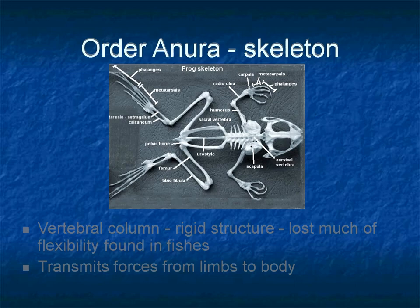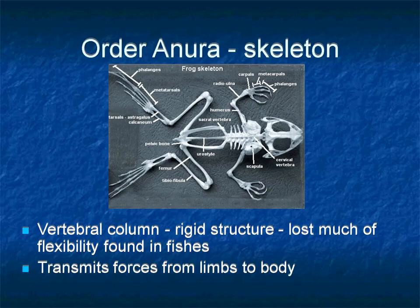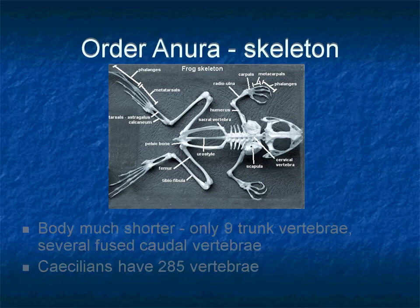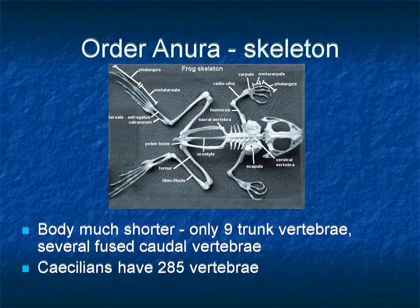Amphibians support their body and muscular movement with a well-developed endoskeleton of bone and cartilage. The vertebral column of anurans is a rigid frame that has lost much of the original flexibility evident in fishes, enabling them to transmit forces from limbs to the body, since anurans move with limbs rather than swimming with trunk musculature. The body is shortened such that they have only nine trunk vertebrae, and several fused caudal vertebrae form a rod-like structure called the urostyle. By comparison, limbless caecilians have 285 vertebrae.